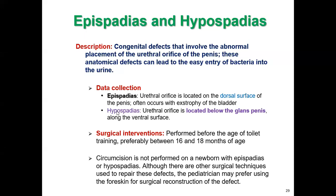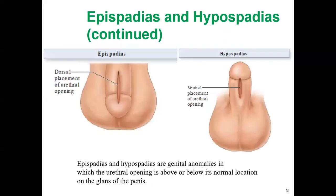Hypospadias means the urethral orifice is located below the glans penis along the ventral surface. Looking at this picture, we can see epispadias and hypospadias side by side. Both are abnormal conditions.